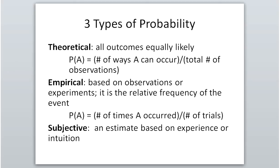For example, the probability of drawing a queen from a deck of cards is 4 queens divided by 52 total cards — 4/52. The chance of drawing any card is equally the same, so this is theoretical. In contrast, empirical probability is based on observations or experiments — when we actually collect data. The probability of an empirical event is the number of times it occurred divided by the total number of trials.